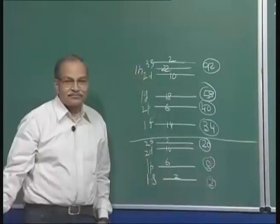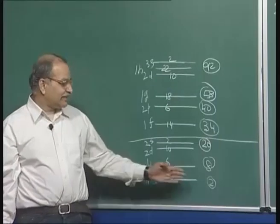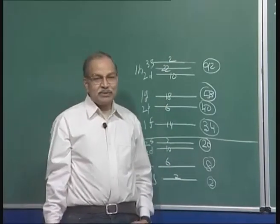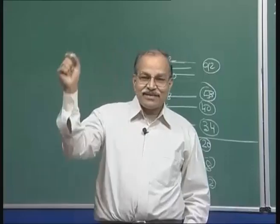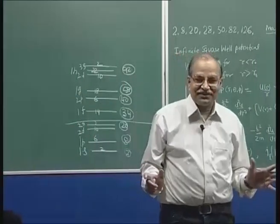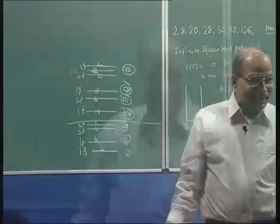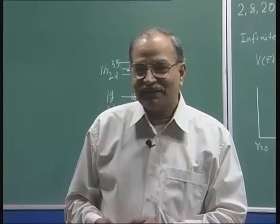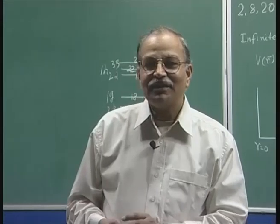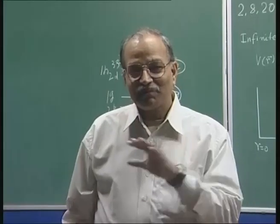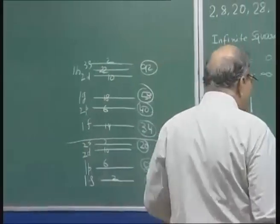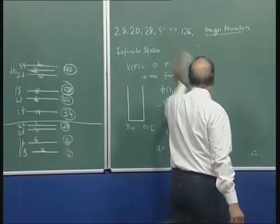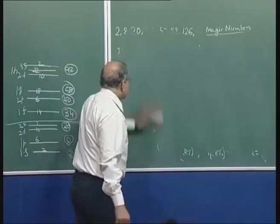The infinite square well potential does not reproduce the experimental magic numbers beyond 20. A second simple potential to try is the three-dimensional harmonic oscillator potential.